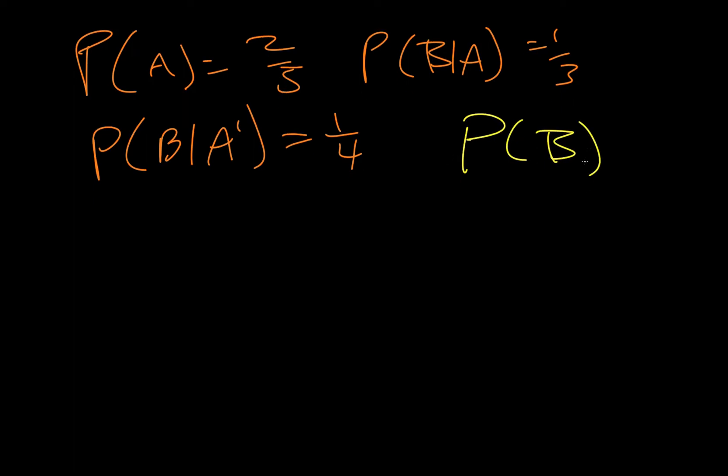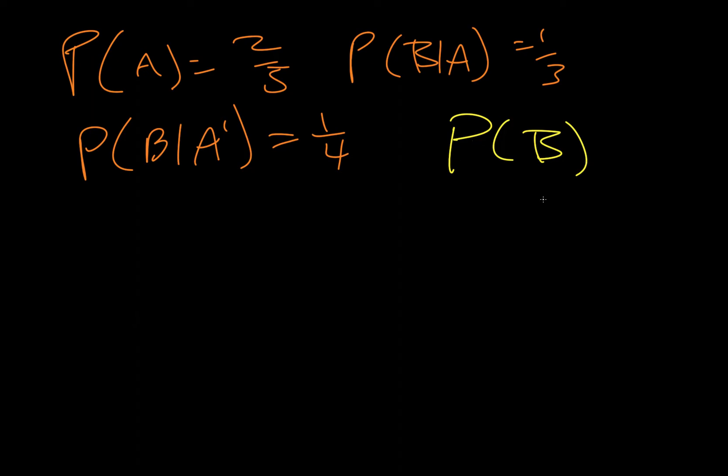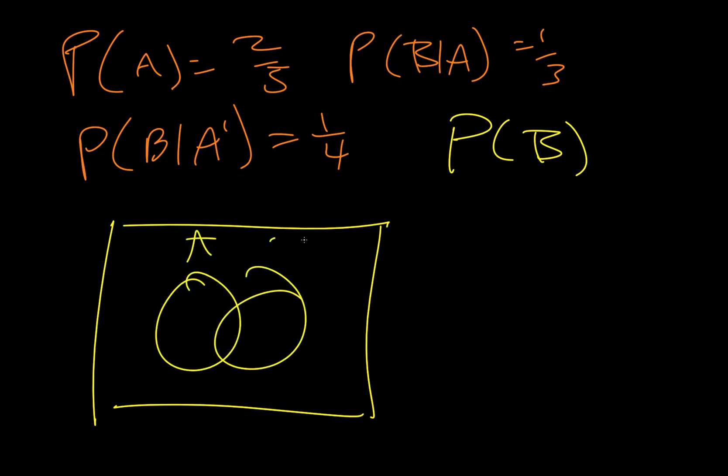So if I'm drawing, we have A and B, and so I'm going to draw a Venn diagram. Call this A, call this B. Now if we want to find the probability of B, there's two pieces that we need to find. We need to find the intersection of A and B, and then we need to find the probability of the intersection of B and not A.